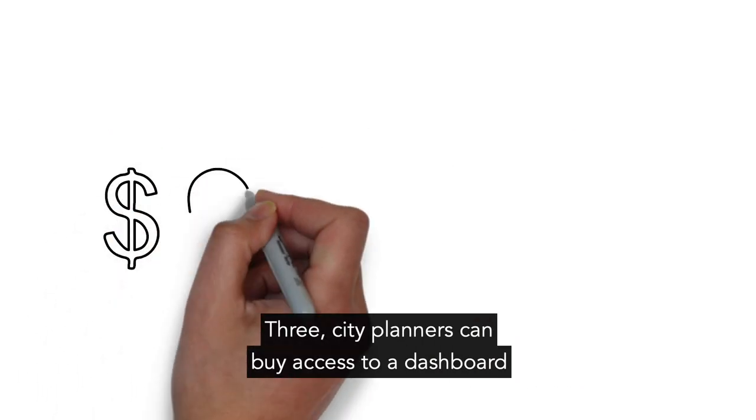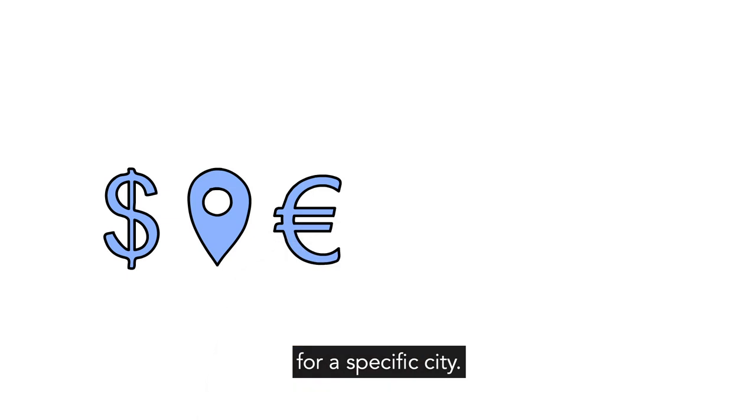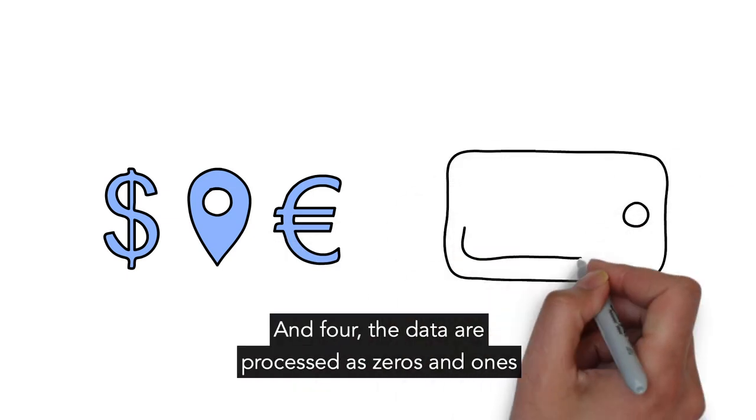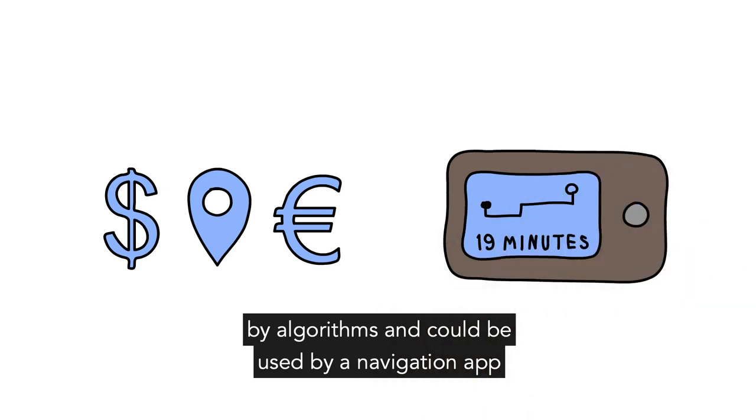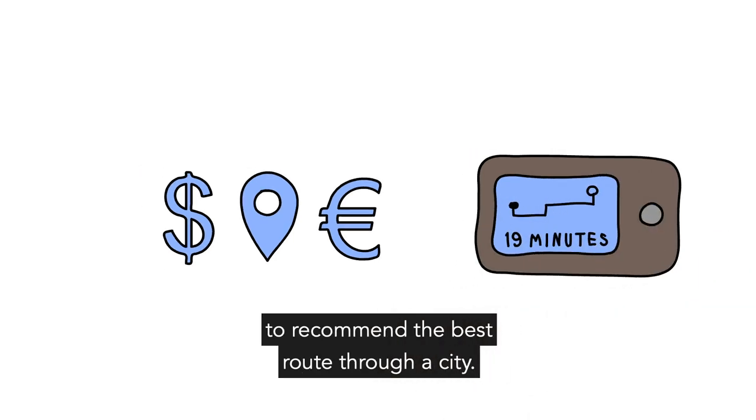Three, city planners can buy access to a dashboard for a specific city. Four, the data are processed as zeros and ones by algorithms and could be used by a navigation app to recommend the best route through a city.